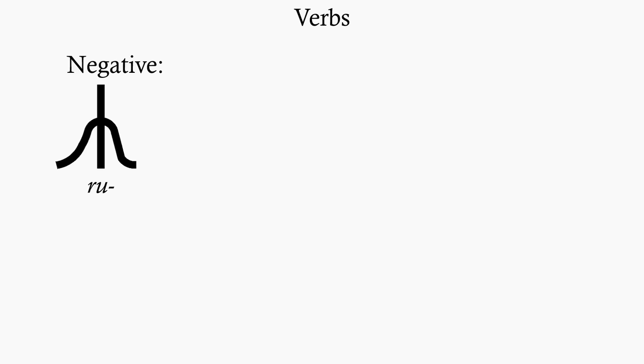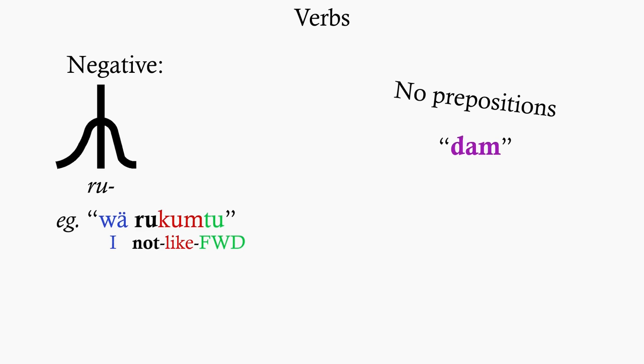For negative, the prefix r is added to the front of the verb. There's also no prepositions in Meandgar, you'd just have words like dam instead, which is the verb to be under.